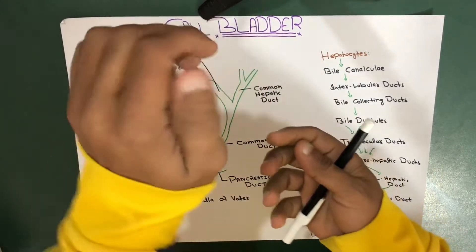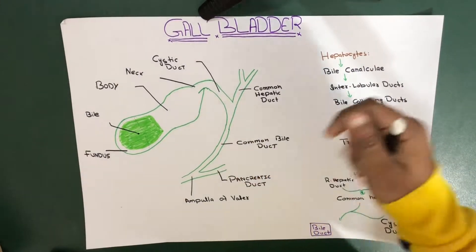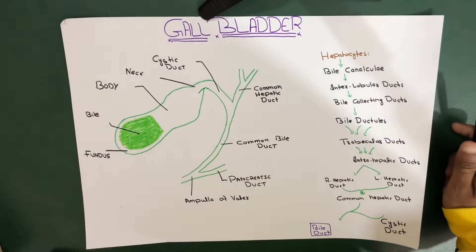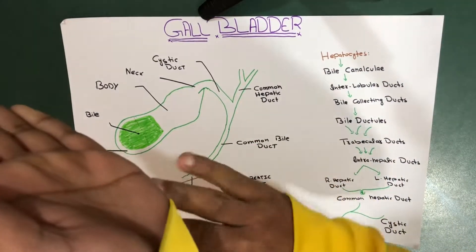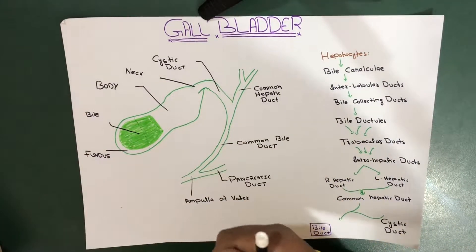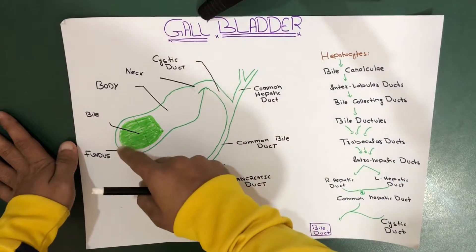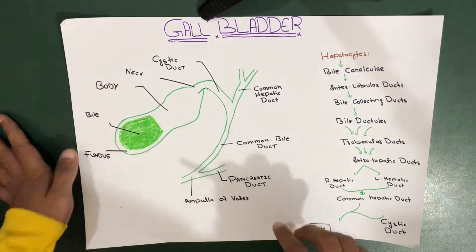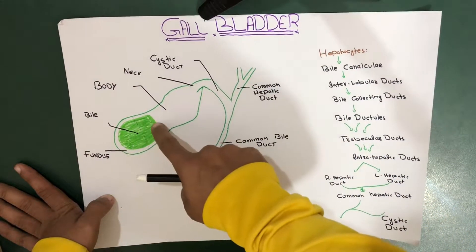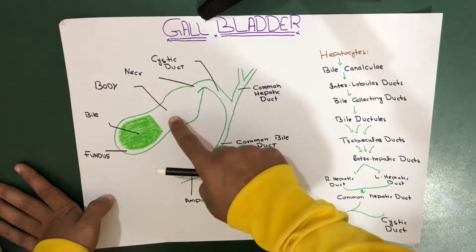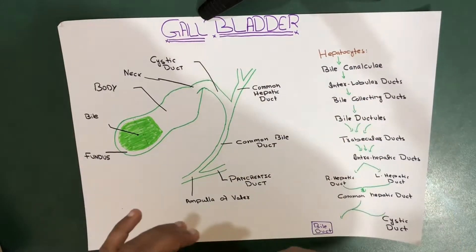On the inferior surface of your liver, you find a hanging structure - inferior and posterior - that is your gallbladder. You can also see the hanging part from the anterior side, which is the fundus part. The gallbladder pouch is divided into three parts: the fundus, the body, and the neck.